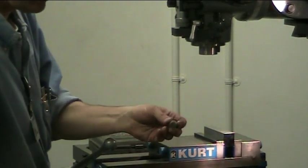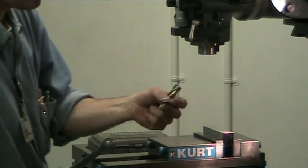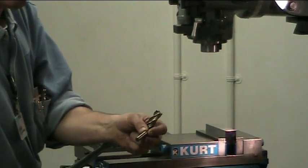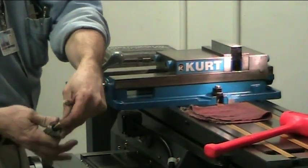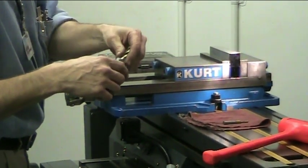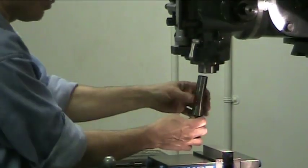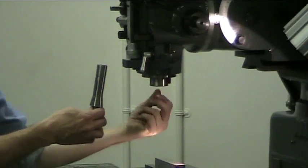This is a 5/8 shank end mill and this is a 5/8 R8 collet. You don't want to use a 3/8 shank end mill and put it in the 5/8 collet because it won't work. So you always match collet sizes to the shank sizes of the end mill.